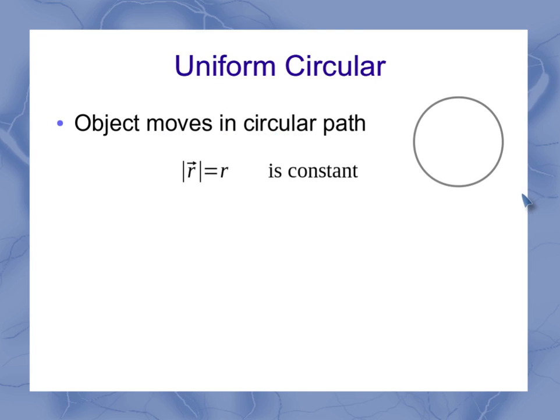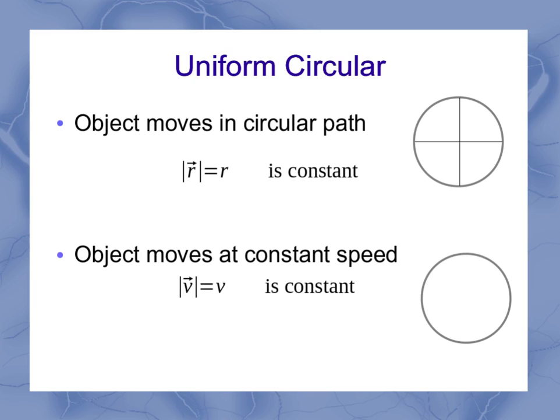And that means that my radius is constant all the way around the circle. But we also have that the object moves at constant speed, so my V is constant everywhere around the circle.